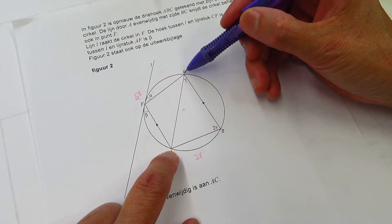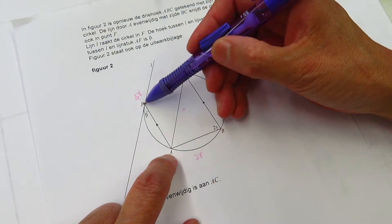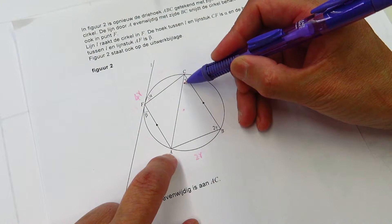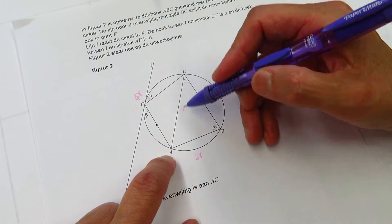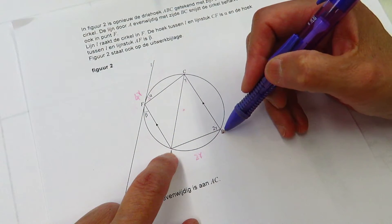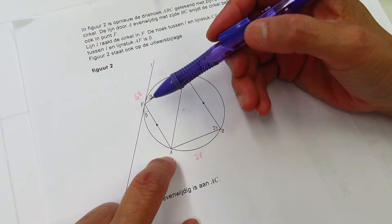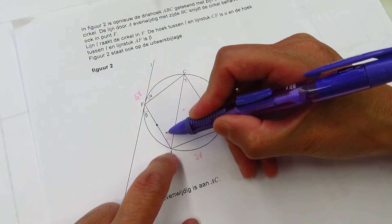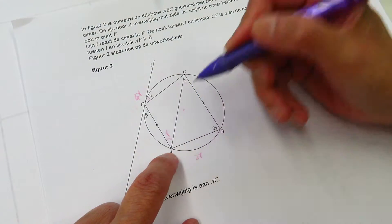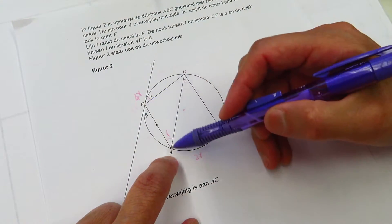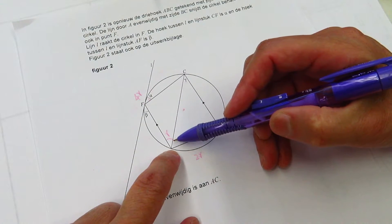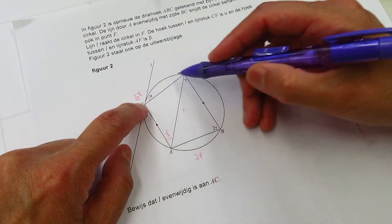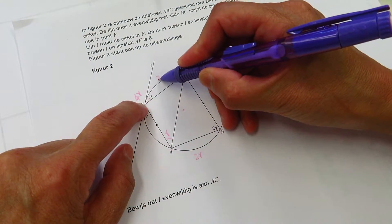Another thing we know is BC is parallel to AF. Then this angle, the alternate angle, ACB is equal to FAC. So we get to know here is gamma. If FAC, the angle is gamma, then the arc of FC is 2 gamma.